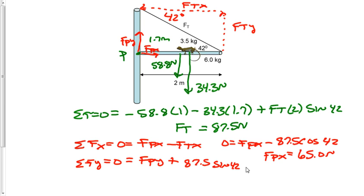And then we're just going to subtract the two masses. The weight of the mass is 58.8 and minus 34.3. And we get force pole y equal to 34.6 newtons.